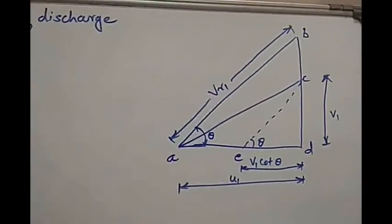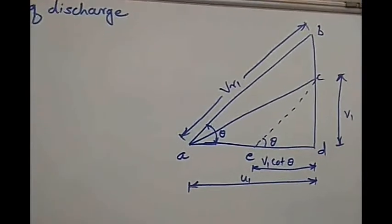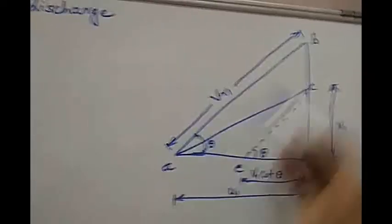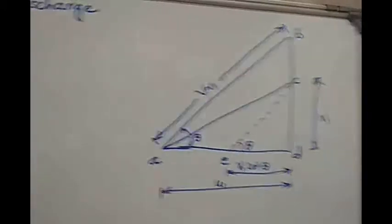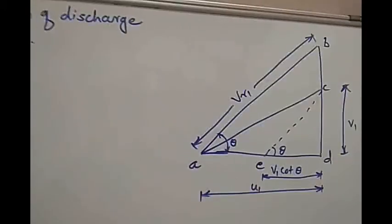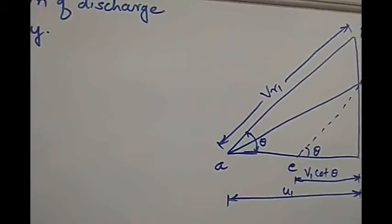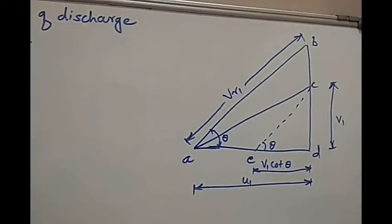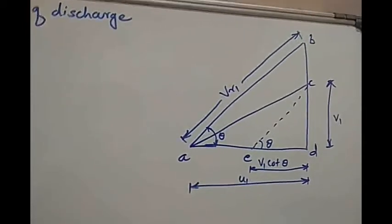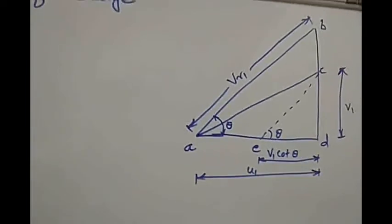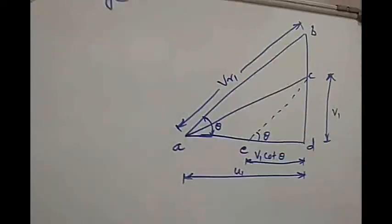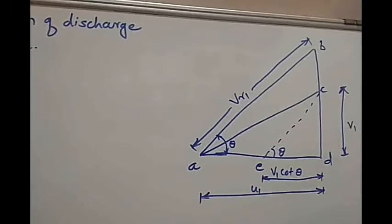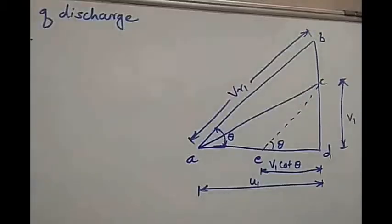Now see this diagram — the velocity triangle drawn for the inlet. The inlet velocity triangle is ABD. AB is the relative velocity. This diagram is drawn for the pump running at normal condition. When the pump is working at normal condition, the velocity triangle is ABD, and AB is the relative velocity which is parallel to the inlet tip of the vane.